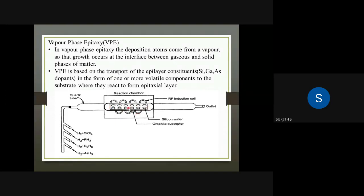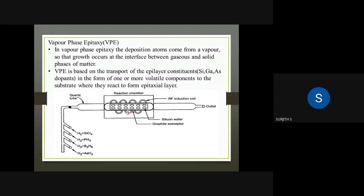We have a silicon wafer that we react with gases. The deposit forms on the wafer as an epitaxial layer. Examples include silicon, gallium, and arsenic used as vapor sources.